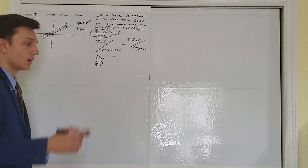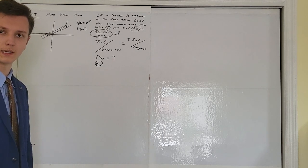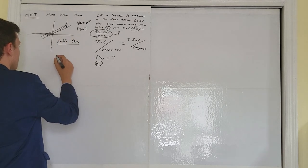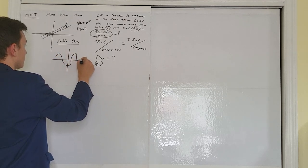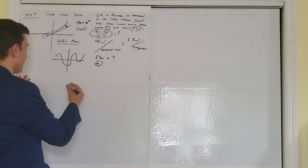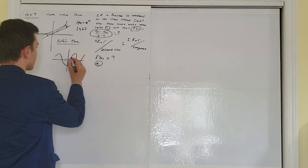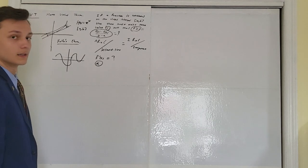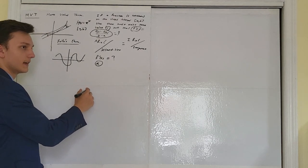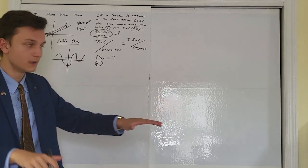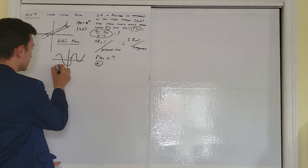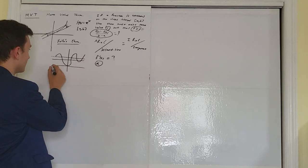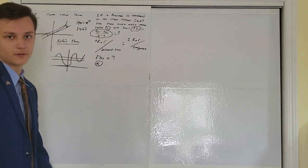There is a derivation of the MVT called Rolle's Theorem — it's pretty much the same thing, just a special case. Rolle's Theorem states that if you pick two points on a function that are at the same y-value, the function must achieve a horizontal tangent line at least once between those points. This is a derivation of the MVT because if you take the average rate of change between two same-height points, the secant line is also horizontal.